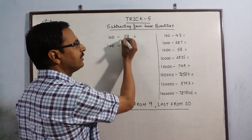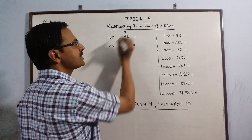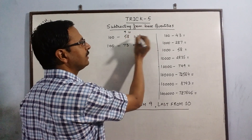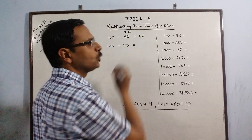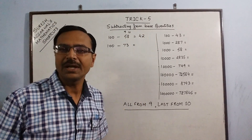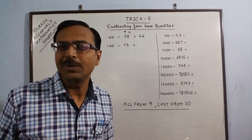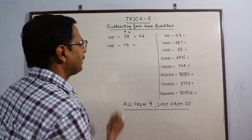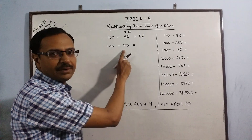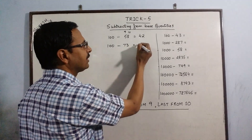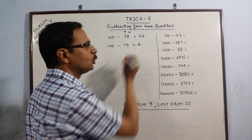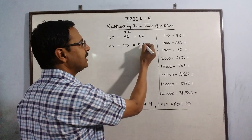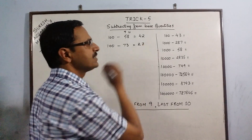So 9 minus 5 gives us 4, and 10 minus 8 gives us 2 — which is the required result. It is as simple as that. Applying the same rule: 9 minus 7 gives us 2, and 10 minus 3 gives us 7.